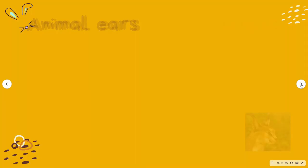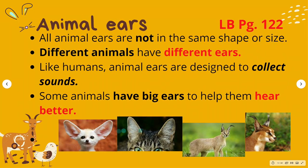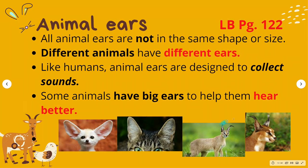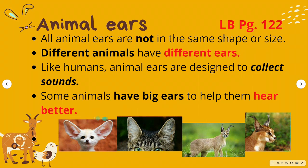Did you know that all animal ears are not the same shape or size? Different animals have different ears. Like humans, animal ears are designed to collect sounds. Some animals have big ears to help them hear better — for example, the desert fox, hare, and deer.